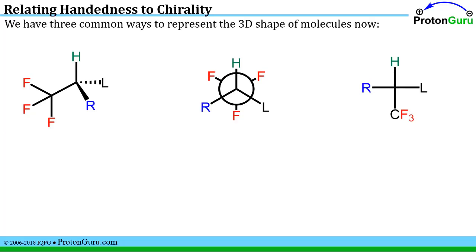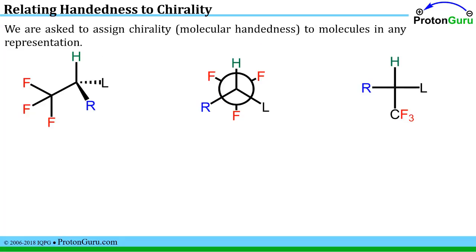Once we've learned about Fischer projections, we should have three common ways to represent the three-dimensional shape of molecules: line-bond structures, Newman projections, and Fischer projections. One of the great challenges to students studying stereochemistry is that we're now asked to assign chirality or molecular handedness to molecules in any representation.